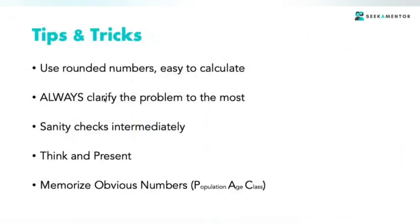Coming to the tips and tricks, one person asked what numbers you should remember. So memorize the obvious numbers - I would suggest memorize the population, the age distribution. India's distribution less than 25 is around 50 percent, so have that classification ready on your tips.